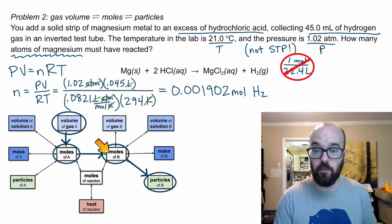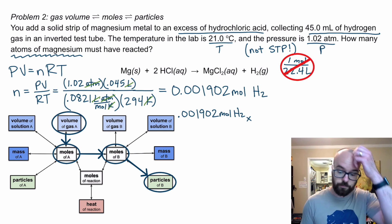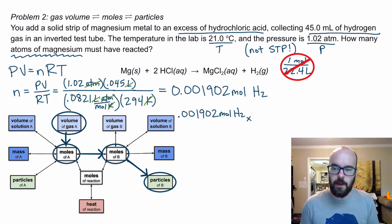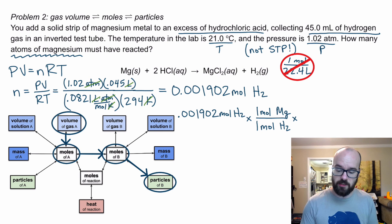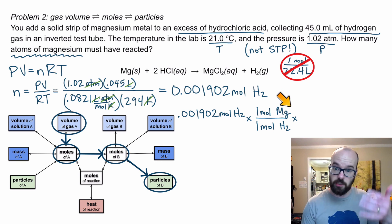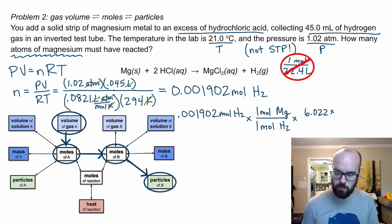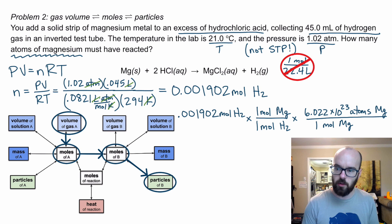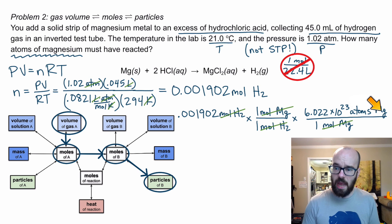Now I need to convert to moles of magnesium and then to particles of magnesium. I set up a stoichiometry conversion. The ratio is one-to-one: one mole of H₂ per one mole of magnesium, so moles of H₂ cancels out and I have moles of magnesium. Then I use Avogadro's number — 6.022 × 10²³ atoms per mole — on top, with moles of magnesium on the bottom. Units cancel and I'm left with atoms of magnesium.